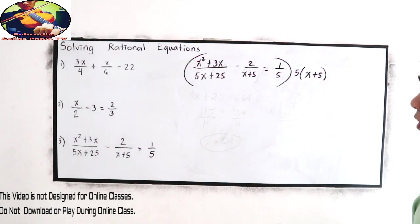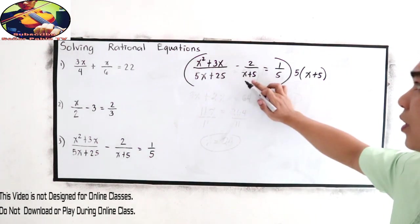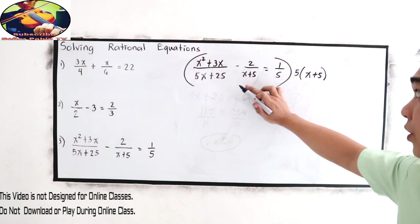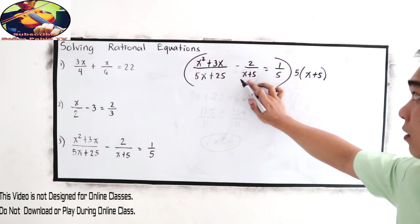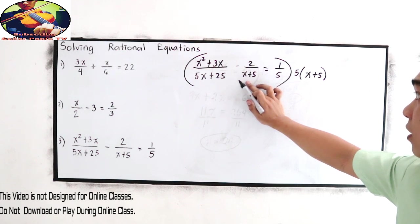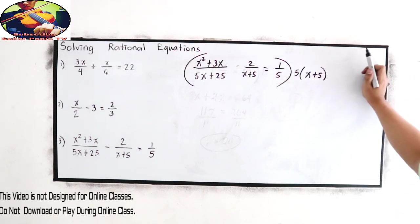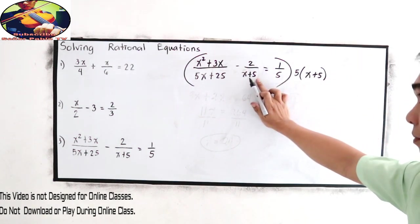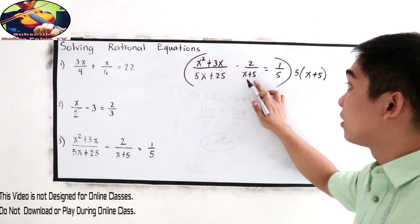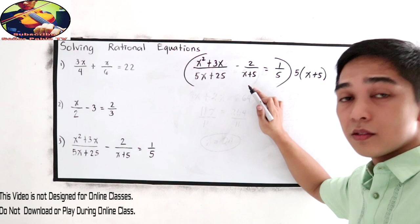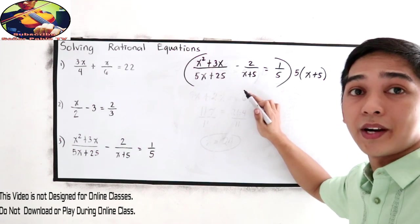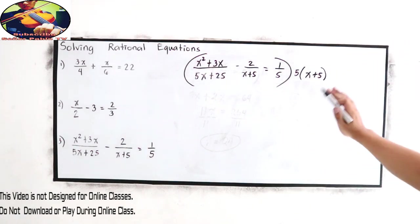And of course, since this is a rational expression or rational equation, our domain is x such that x is not equal to negative 5, because if x is negative 5, the equation will become extraneous or undefined.